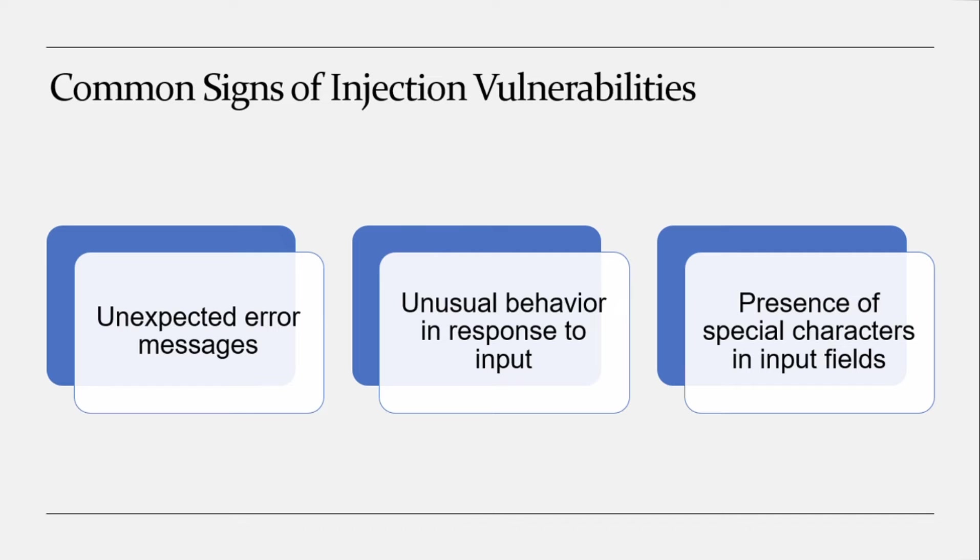What are the common signs of injection vulnerability? Signs include unexpected error messages, unusual behavior in response to input, presence of special characters in the input field, user-supplied data that is not validated, and filters not being properly applied by the application. Also, using dynamic queries or non-parameterized calls without context-aware escaping directly in the interpreter, and hostile data used within object-relational mapping search parameters to extract additional sensitive records.